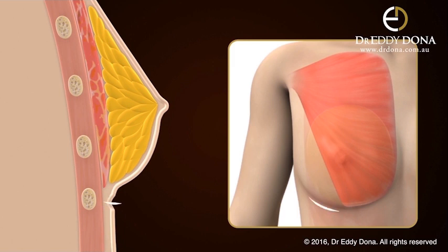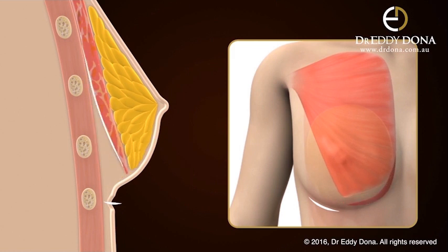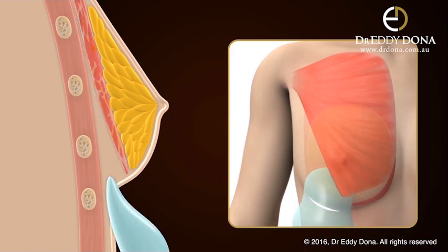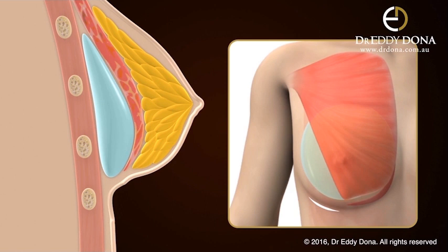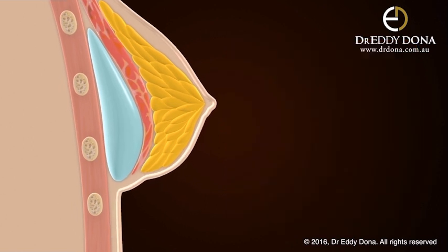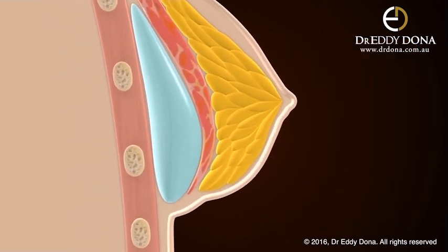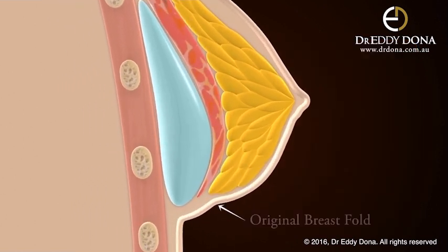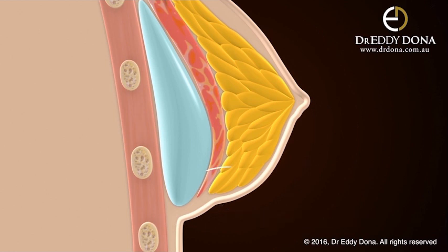The necessary surgery requires an incision to be placed below the breast fold. After the appropriate implant is inserted, you'll note that the original breast fold is now sitting along the lower breast curve. Initially, this region remains tight and causes a flatness, or indentation. This indentation is the double bubble.